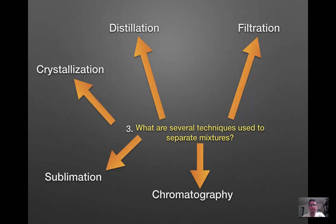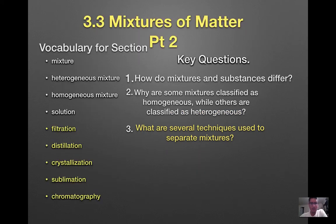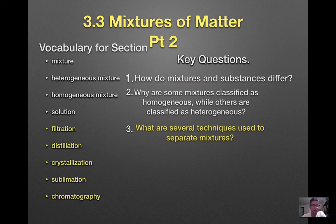So if you want to find out the different components of an ink blot or a spinach leaf, you can run chromatography to expose the underlying molecules or chemicals that make up a single color for any particular substance. To review, the five separation techniques are: filtration, distillation, crystallization, sublimation, and chromatography. This was 3.3 Mixtures of Matter Part 2, discussing the last key question: what are several techniques used to separate mixtures?